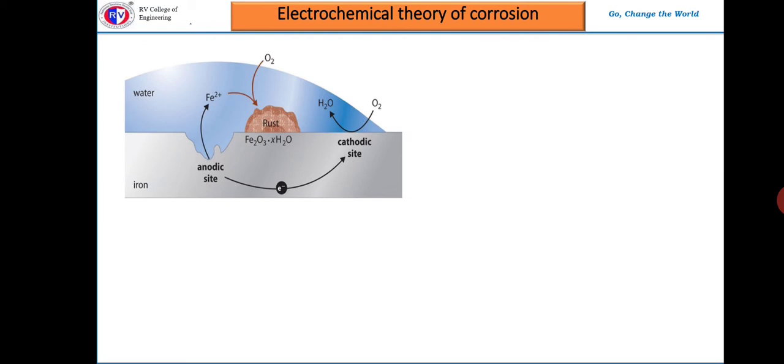Whenever a dust particle settles on the metal surface, area below the dust particle having less oxygen acts as anode. Whereas rest of the area where dust is not covered having more oxygen concentration acts as cathode.